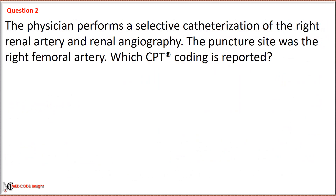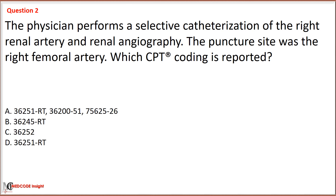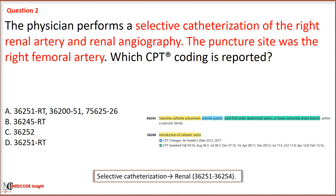Practice Question 2: The physician performs a selective catheterization of the right renal artery and renal angiography. The puncture site was the right femoral artery. Which CPT coding is reported? Option A: code 36251 with modifier RT. Option C: code 36252. Option D: code 36251 with modifier RT. Since the catheterization involves the renal region, we use the renal code range 36251 to 36254.